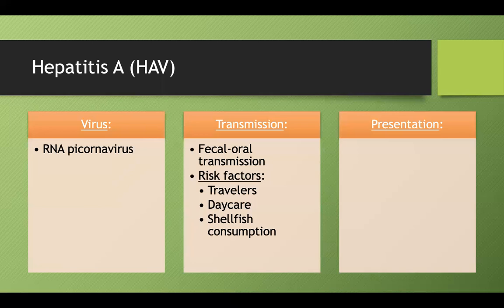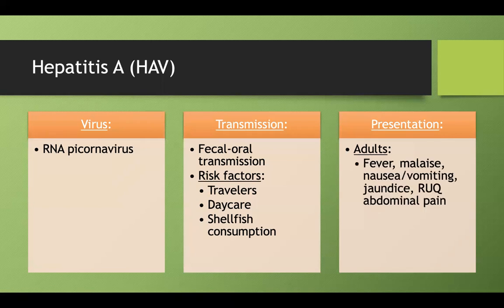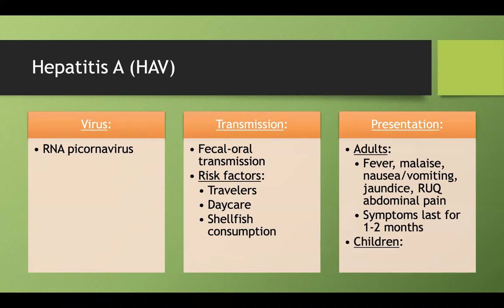Hepatitis A presents differently depending on age. In adults, you'll see fever, malaise, nausea, vomiting, jaundice, and right upper quadrant abdominal pain — all classic hepatitis symptoms — lasting about one to two months. Children, on the other hand, are often asymptomatic.